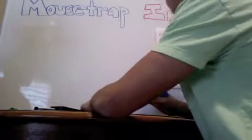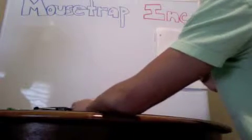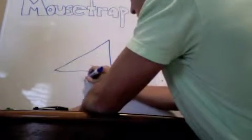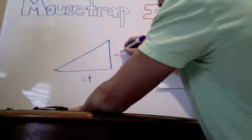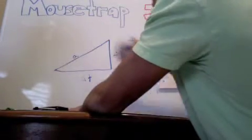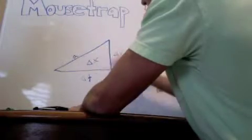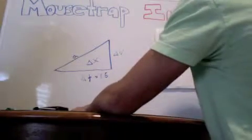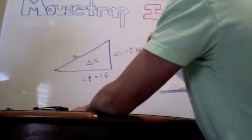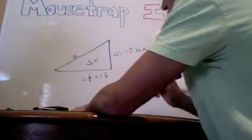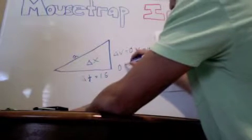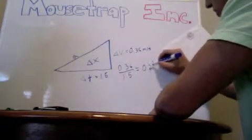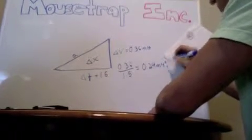We used kinematics to determine the acceleration for the first 1.5 seconds of the car. The first way is by drawing a triangle, where the bottom is your change in time, the right side is your change in velocity, and the slope ends up being your acceleration — and the middle is your displacement. Our change in time was 1.5 seconds and our change in velocity was 0.36 meters per second. So slope — rise over run — is 0.36 over 1.5, which gives an acceleration of 0.24 meters per second squared. Voilà.